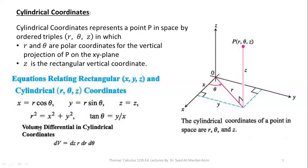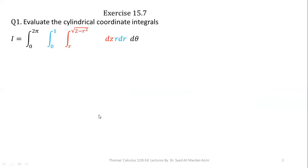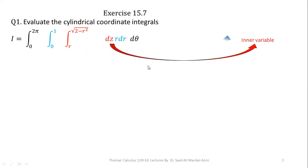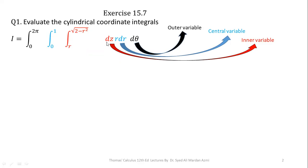One more important thing: in triple integrals in cylindrical coordinates, we will always take the order dZ, R dR, d theta. This means dZ is the inner variable, dR is the central variable, and d theta is the outer variable. This order is fixed — we always integrate first with respect to Z, then with respect to R, and finally with respect to theta. Here the limits of Z are R to the square root of (2 minus R squared), limits of R are 0 to 1, and limits of theta are 0 to 2 pi.